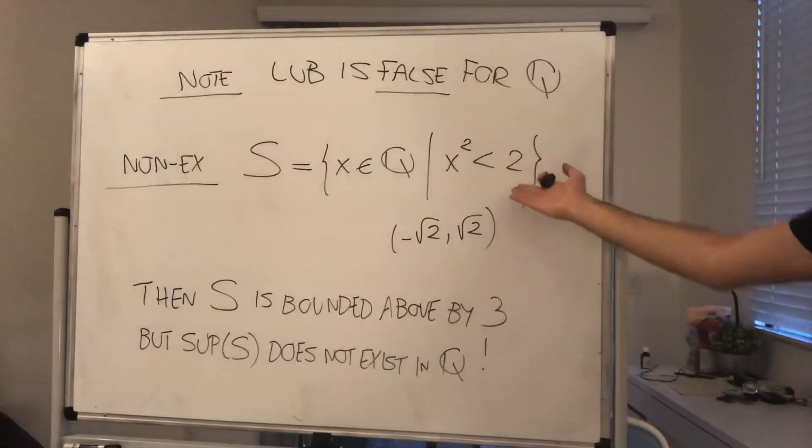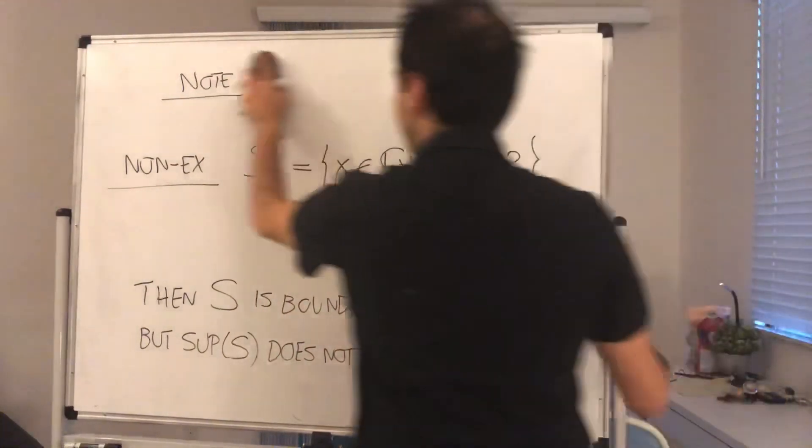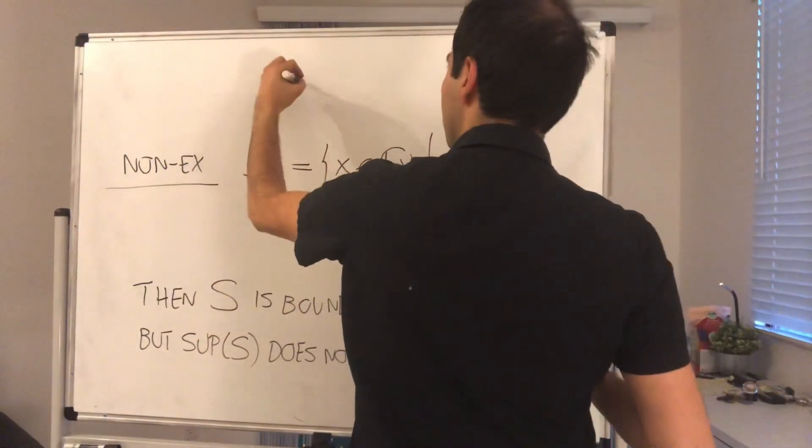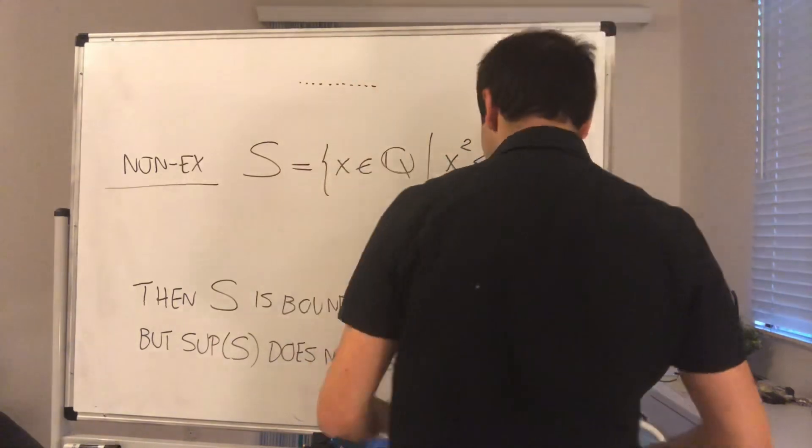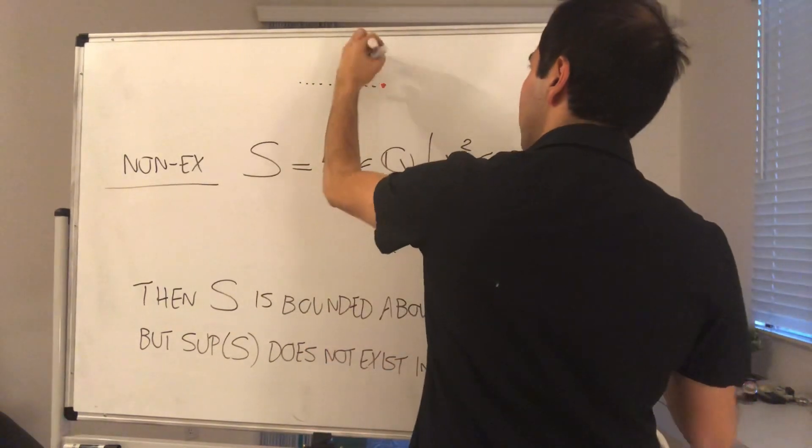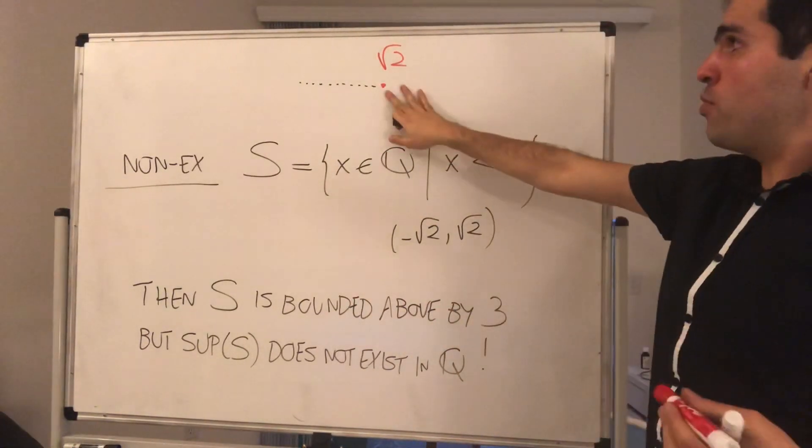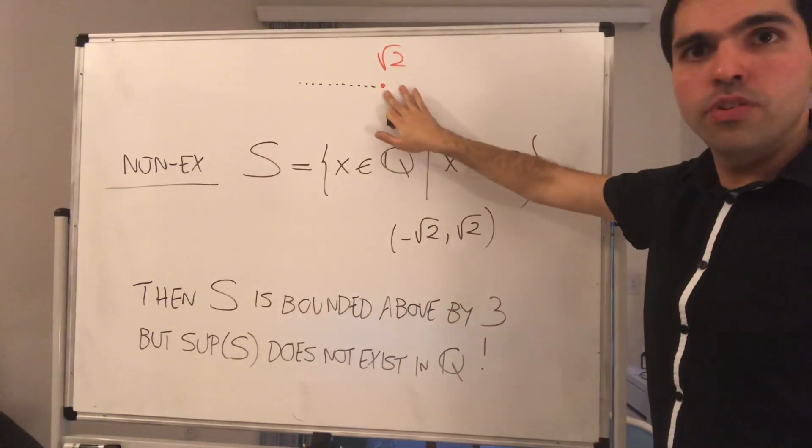the supremum of S does not exist in Q. And why is that? Because look, what is S? It's all the rational numbers, basically between square root of 2 and 2. So, in particular, the supremum of S should be square root of 2, but remember, we don't know what square root of 2 is.